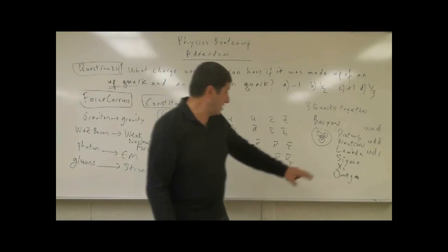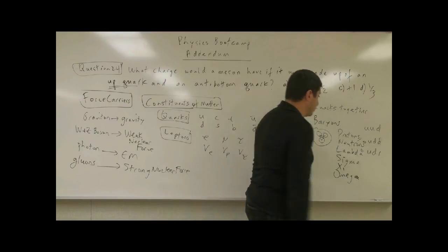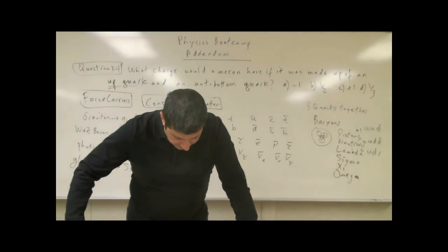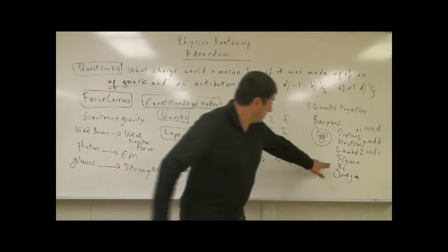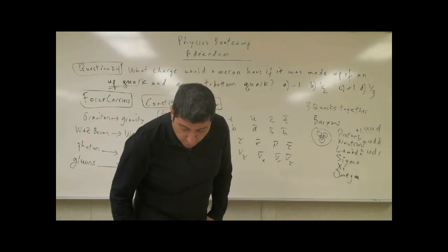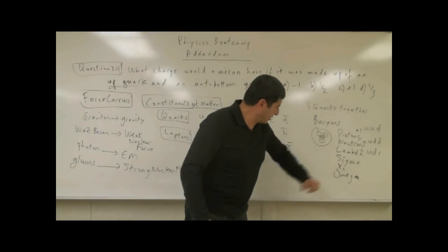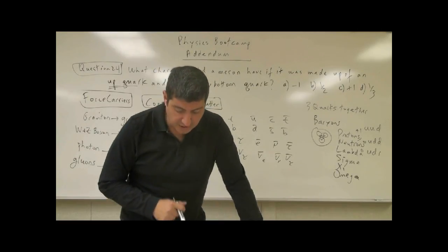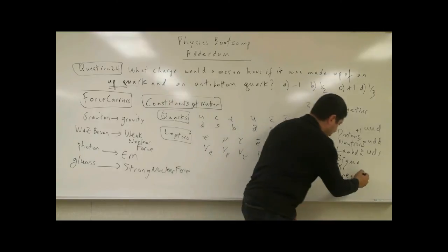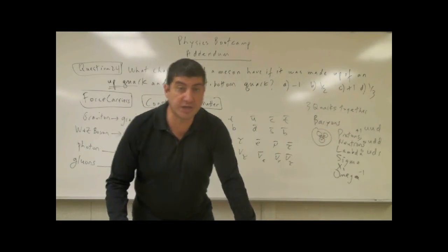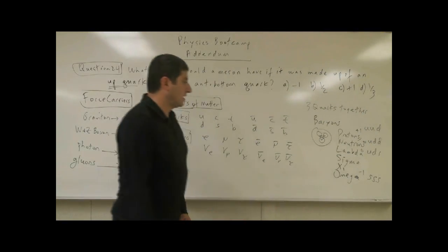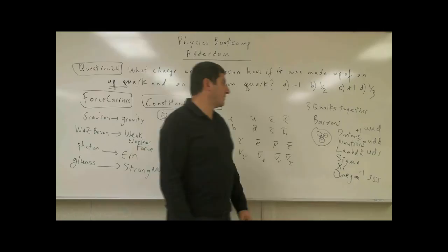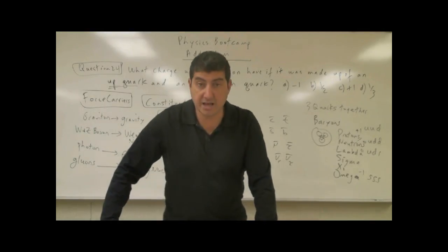The lambda is always going to be zero charge. The neutron is going to be zero charge. The proton is going to be positive one charge. The sigma has three choices: it could be plus one, zero, or negative one. The chi can be zero or negative. The omega is usually going to be minus one charge, and is made up of three strange quarks (SSS). And of course, all of these have their antiparticles: antiparticle omega, anti-chi, anti-sigma, anti-lambda, anti-neutron, and anti-proton.